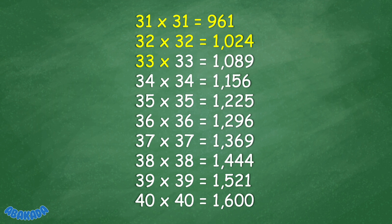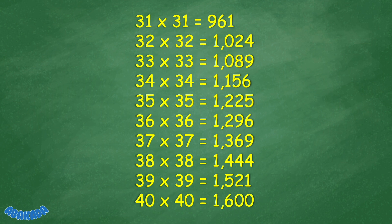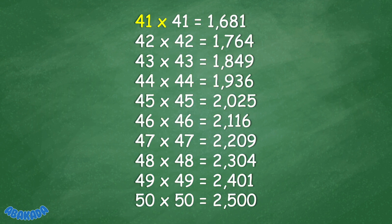33 times 33 equals 1,089. 34 times 34 equals 1,156. 35 times 35 equals 1,225. 36 times 36 equals 1,296. 37 times 37 equals 1,369. 38 times 38 equals 1,444. 39 times 39 equals 1,521. 40 times 40 equals 1,600. 41 times 41 equals 1,681.